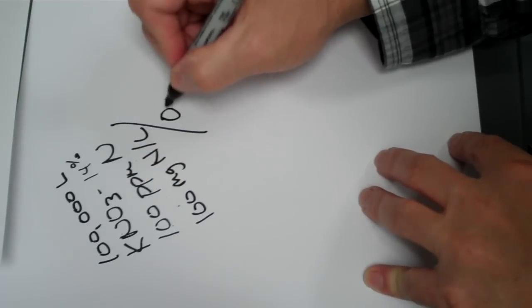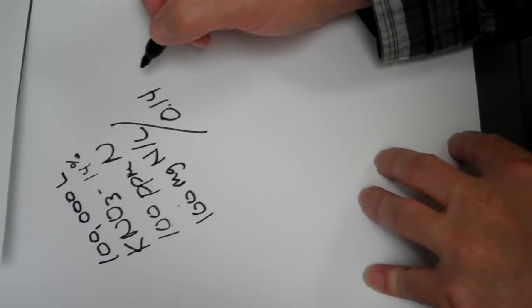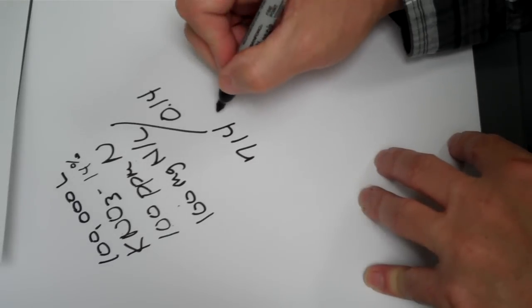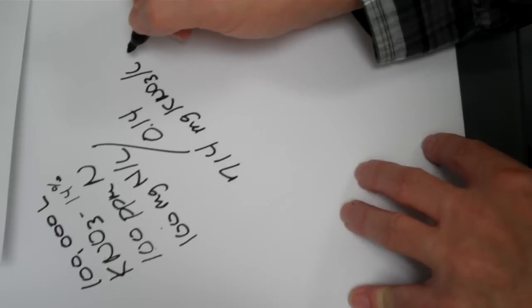Let's divide that, as before, by the 0.14. I'm not putting those units down now, again. We've done that a few times. That would give you 714 milligrams of KNO3 per liter.